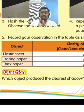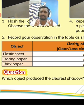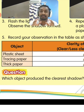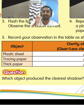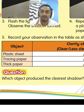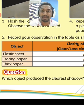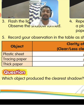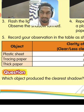Plastic sheet is a transparent object. Transparent object is an object that allows all the light to pass through it. So there is no shadow will be formed — when a light passes through a transparent object, shadow will not be formed.